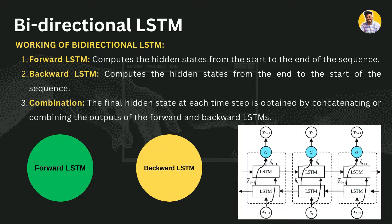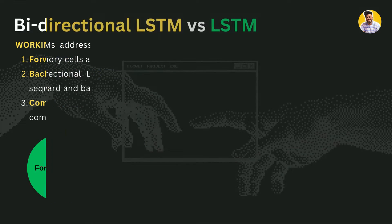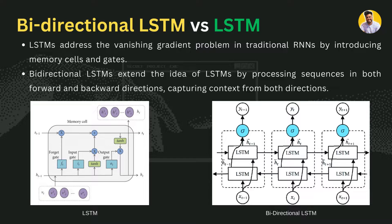Bidirectional LSTM works similarly to simple LSTM. It first computes the hidden states from start to end of the sequence using the forward LSTM, then computes hidden states from end to start using the backward LSTM. The magic happens at the combination stage, where the final state at each time step is obtained by concatenating the outputs of the forward and backward LSTMs. Both LSTM and bidirectional LSTM address the vanishing gradient problem by introducing memory cells and gates. Bidirectional LSTM extends the idea by processing the sequence in both directions, capturing context from both sides in a more meaningful way.